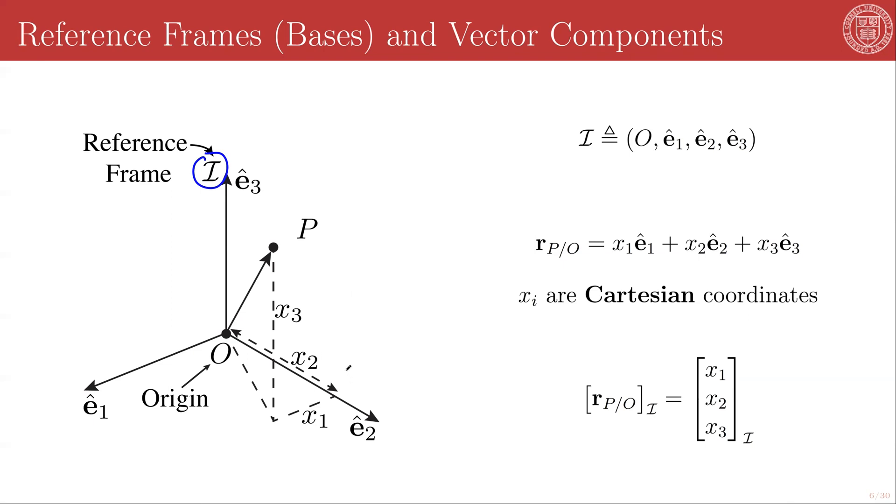The simplest coordinate system, the most basic one, is the one that tracks magnitudes along each of the three unit directions. And so those are called the Cartesian coordinates. So for any vector describing any point P with respect to the coordinate origin O, in our notation we call that r_P/O.